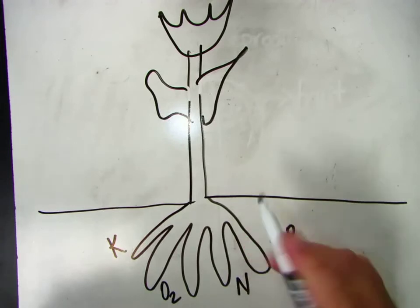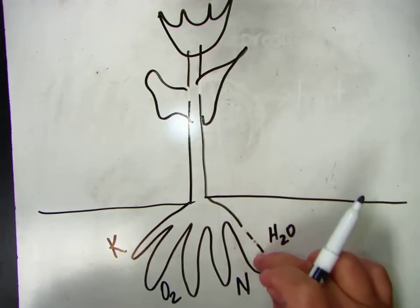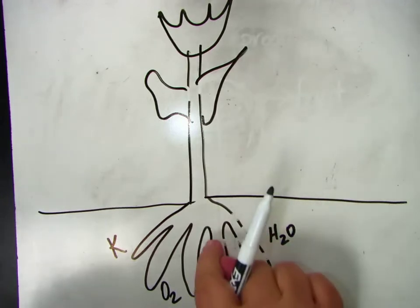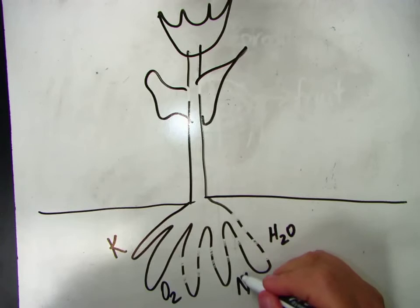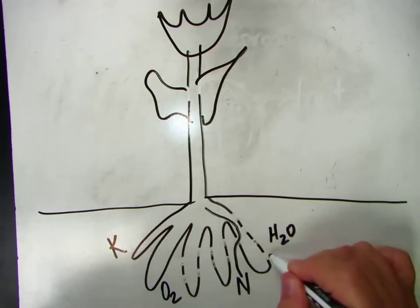And what happens is there's little holes in the sides of the roots. They're tiny little holes you wouldn't be able to see them, and through those holes the plant sucks up nutrients and water.